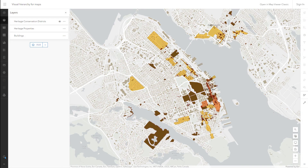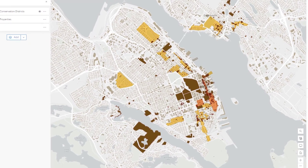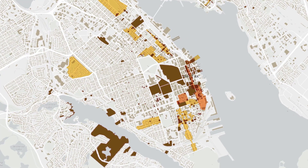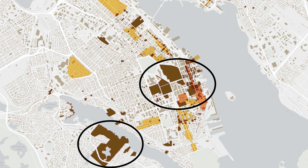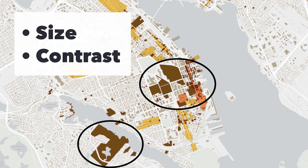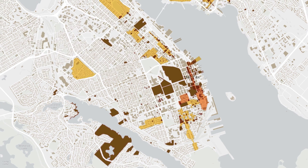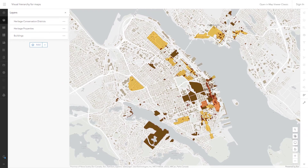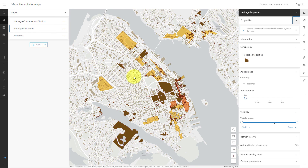I like to start by assessing the current visual hierarchy of my map. What do you notice first? It's probably the large brown polygons, and that's for two reasons. One, they're large, and large things tend to attract attention. Two, they're dark, and the background is light. Dark things have a high contrast with light backgrounds, so they also attract a lot of attention. I can't make these polygons any smaller, but I can make them lighter — for example, by increasing the transparency.